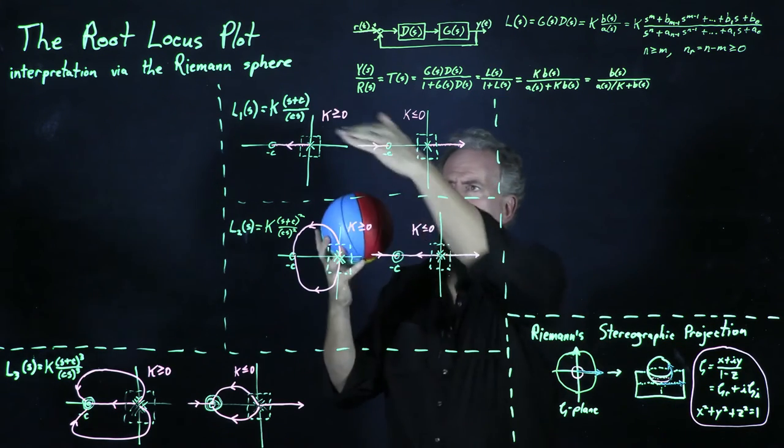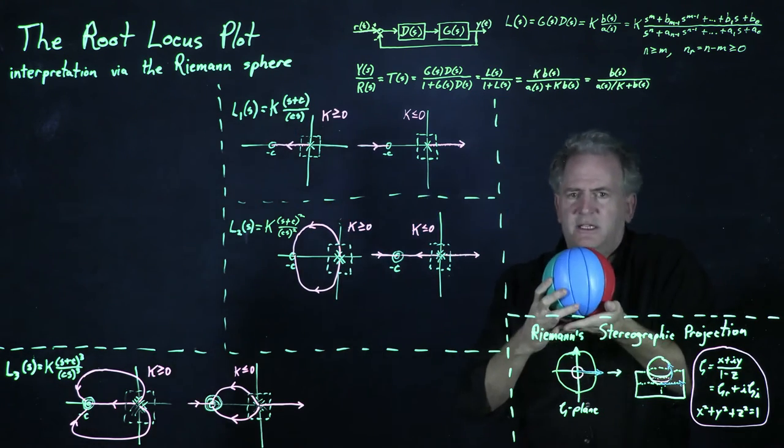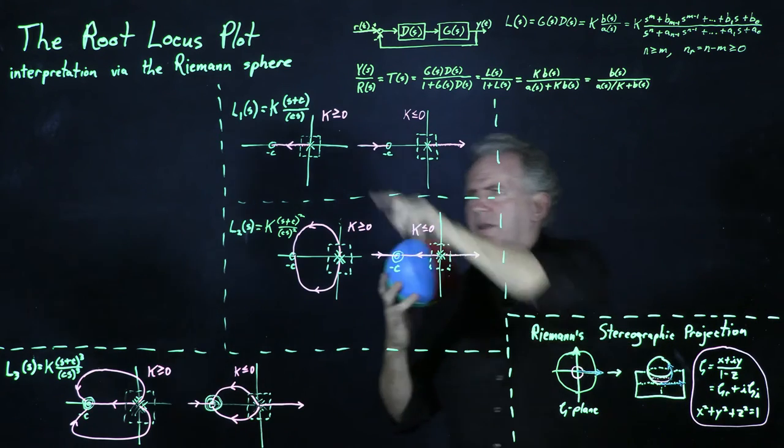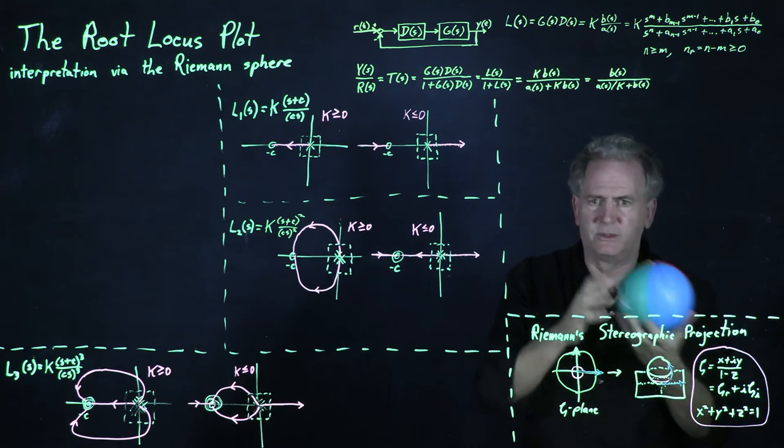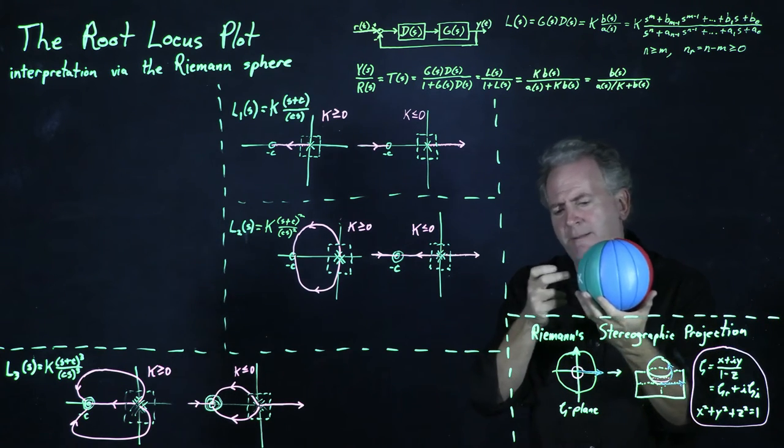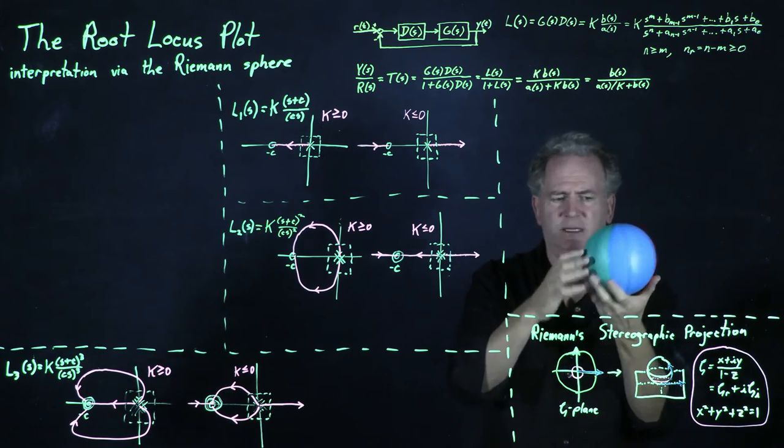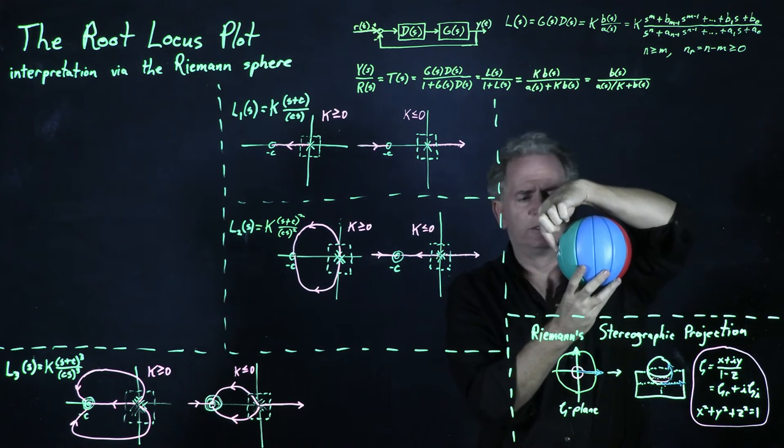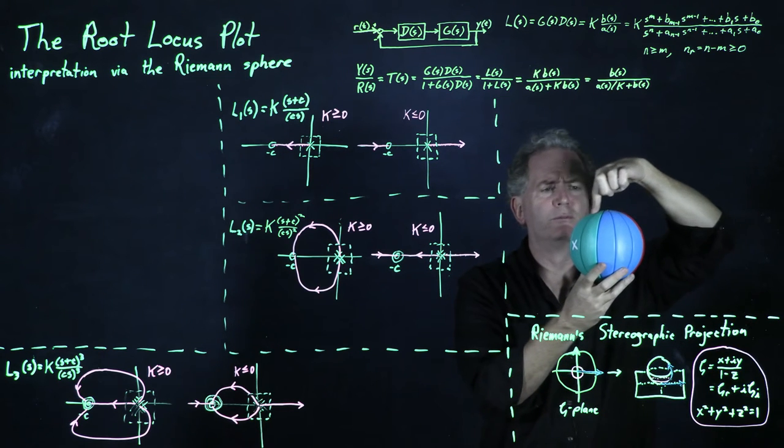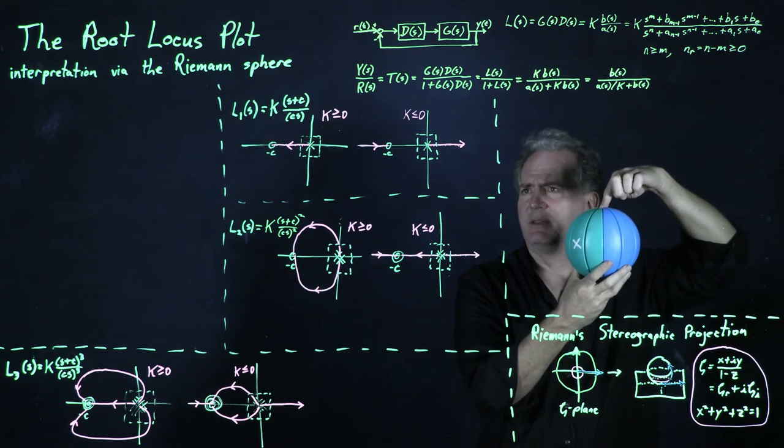So we're going to map the complex plane to the south pole of this sphere, so the origin maps to the south pole. And this point minus c, we'll presume we set this thing up so this point minus c maps to this x right there. And so in the limit that c goes to infinity, then essentially what we're doing is removing that point x to the top of the sphere.